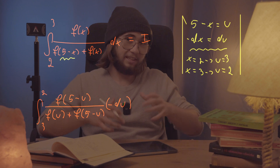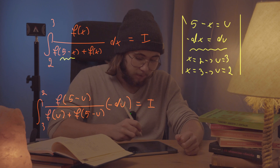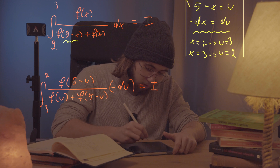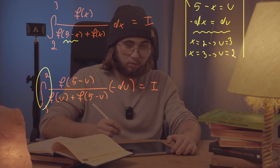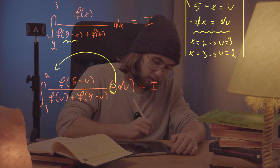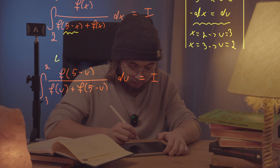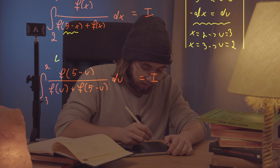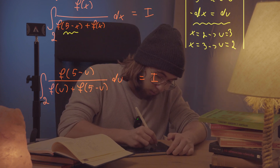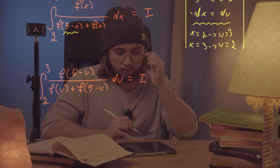The numerical value of this integral doesn't change — it's still equal to I. Now I would like to flip those bounds of integration, because the bound from three to two doesn't look so good. I'll take the negative sign and use it to flip the bounds, delete the negative sign, and rewrite those bounds nicely from two to three.